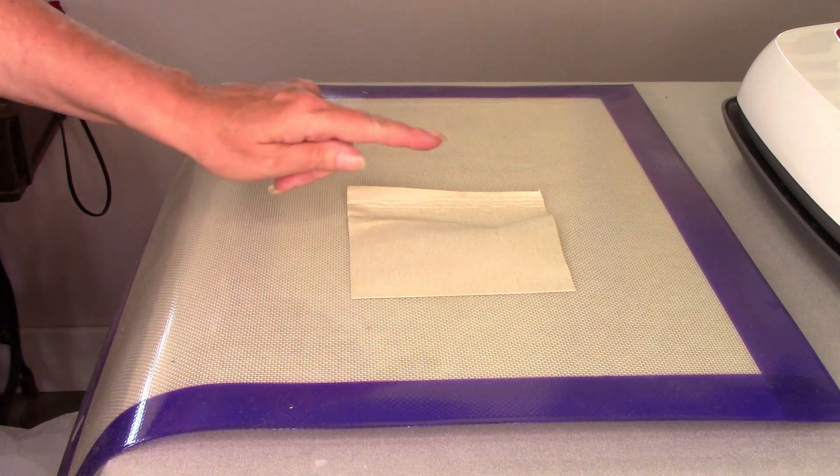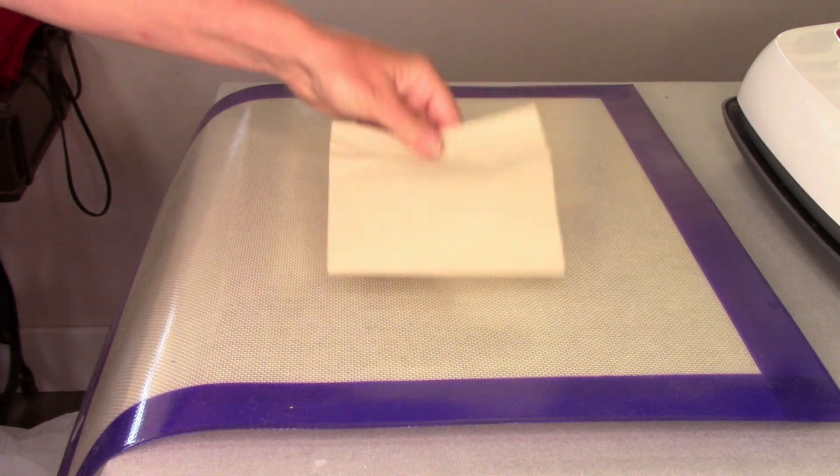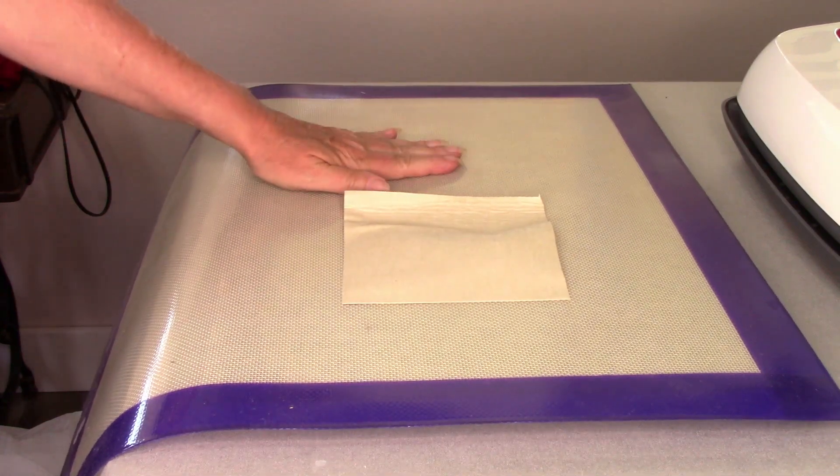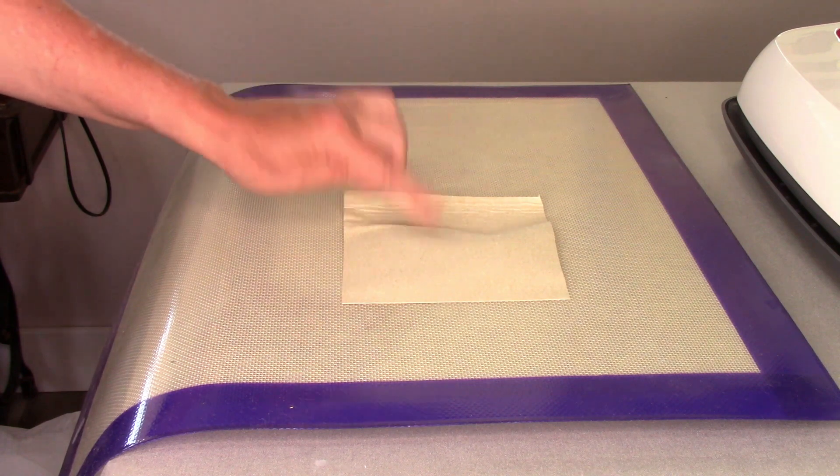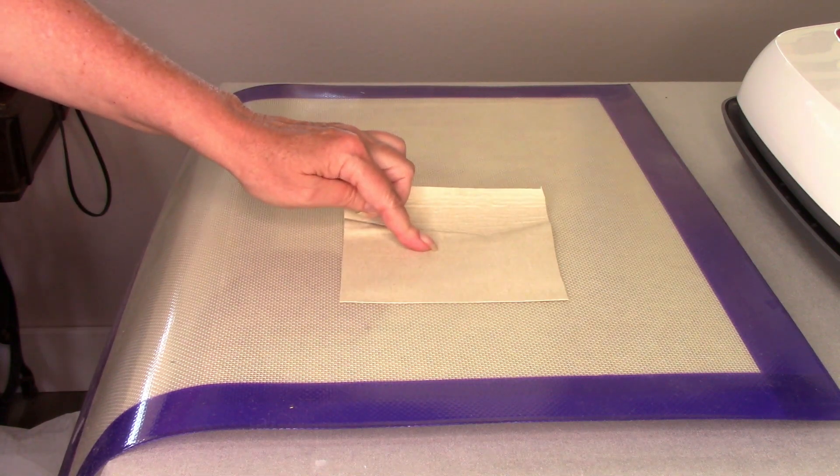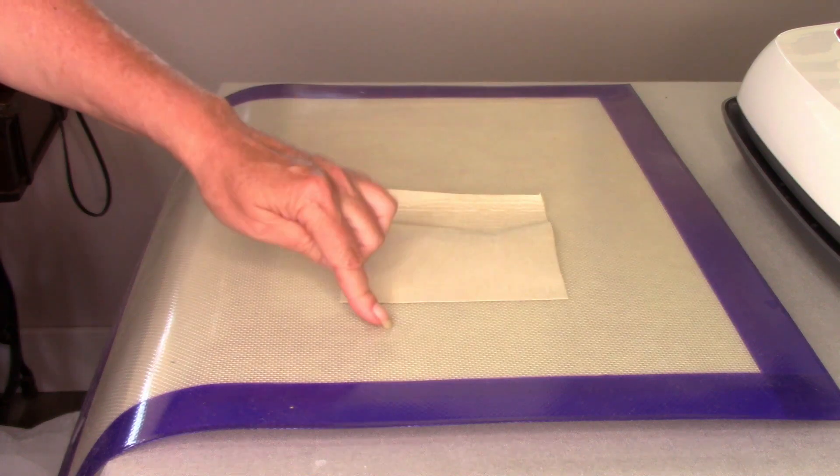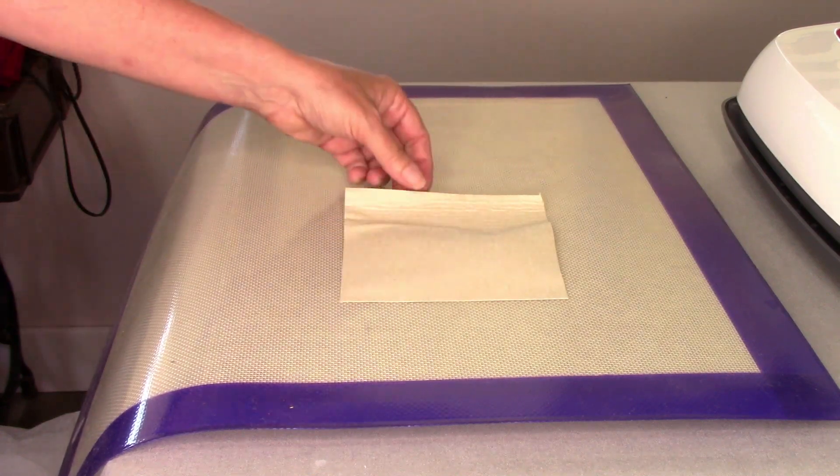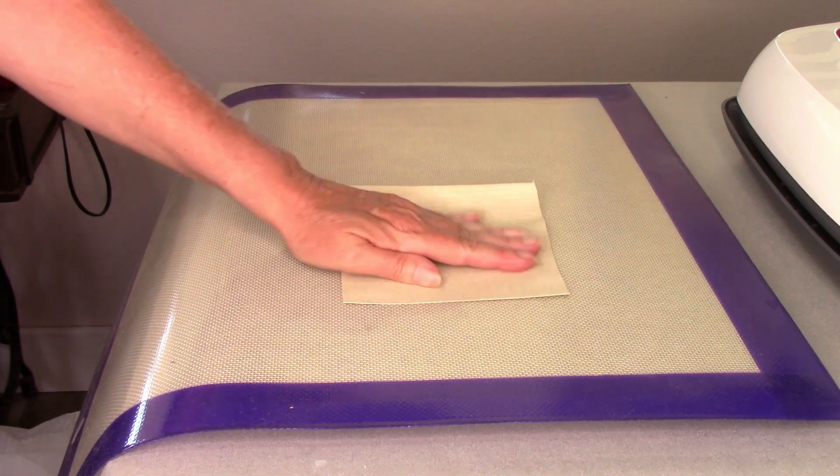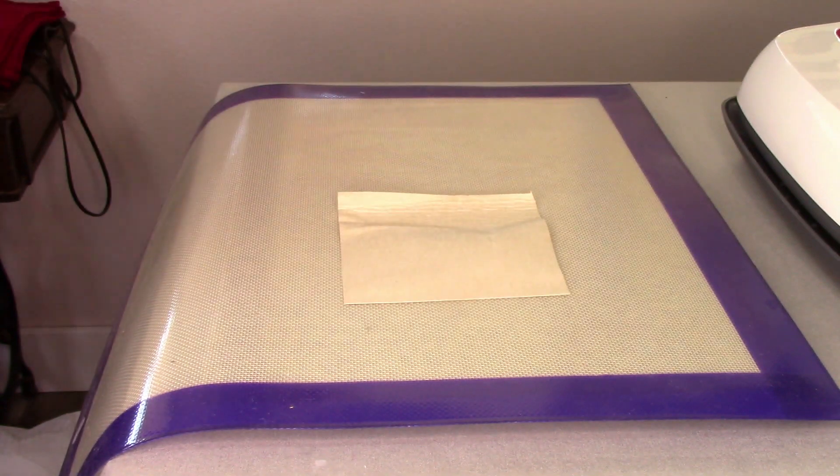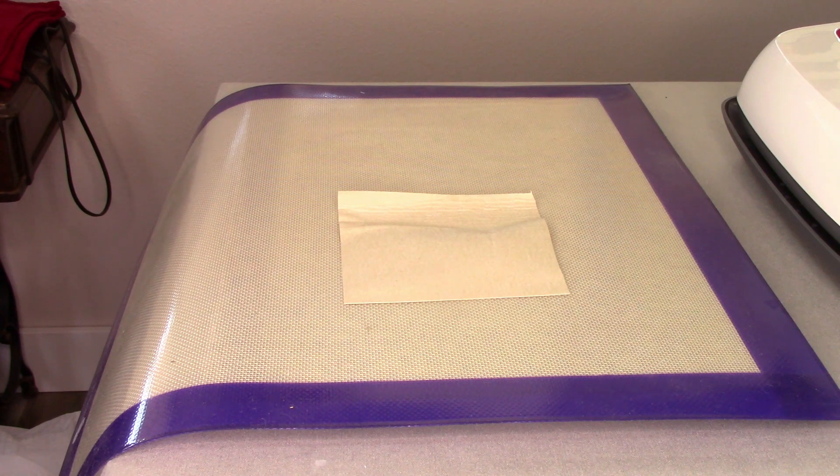Alright. So I am going to iron this. I have it fusible side down. This is a fusing mat. Lots of different brands out there. This will not stick to the fusing mat. It will also, your iron will not stick to your fusing mat. Alright. So I'm using my Cricut Easy Press right now. I have several presses, but we're going to use this one. And basically what we're doing is we're ironing it. Alright, here we go.